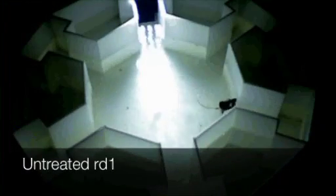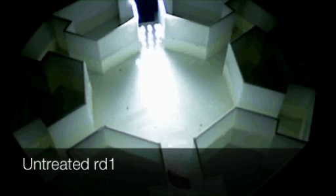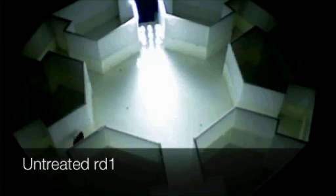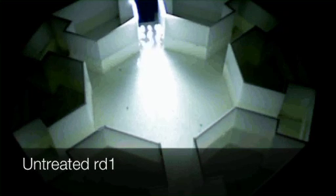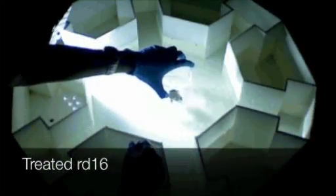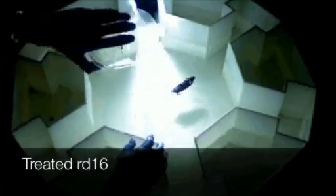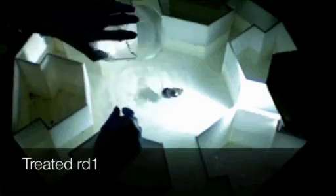There are many extraordinary applications of optogenetics. My favorite is the treatment of seeing impairment. Here you see a mouse that's blind. The mouse, like your kitty cat at home, does not like to be in water, and it's trying to swim up a channel to climb onto a dry platform. Since it's blind, it's doing it through a brute force search by feeling the walls of this maze. After the optogenetic treatment, clearly the animal can now exploit visual information, and it swims directly into the channel to get itself out of the water.